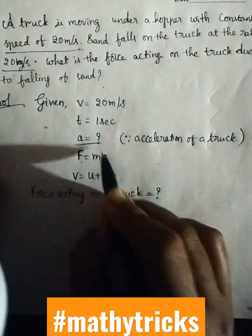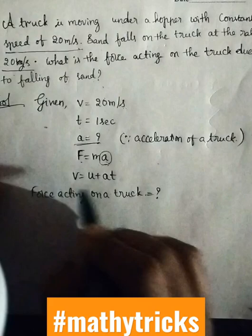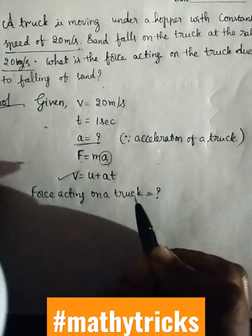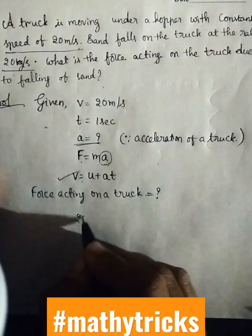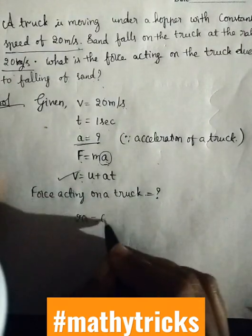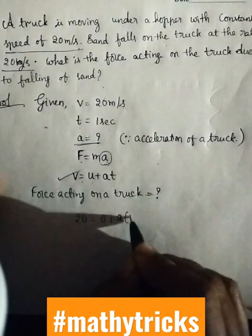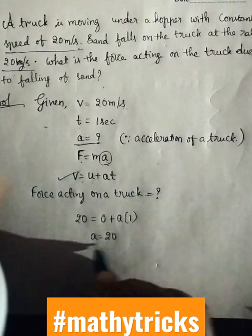Before this we have to find out the acceleration. For this we use the formula v = u + at. Let us substitute the values: 20 = 0 + acceleration × 1 second. So, a = 20.